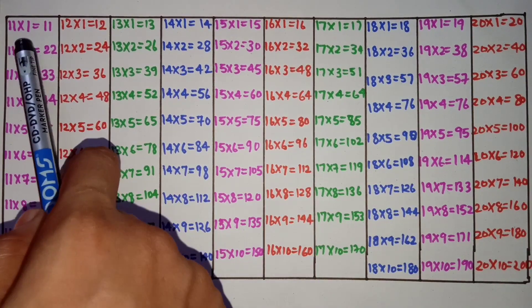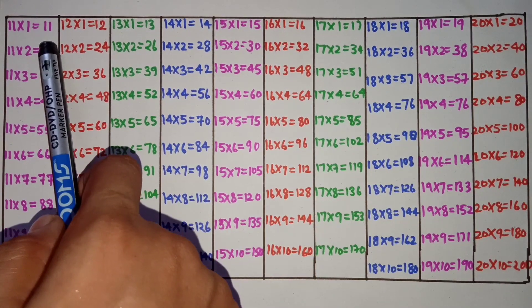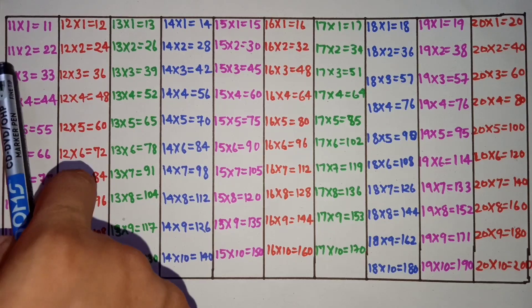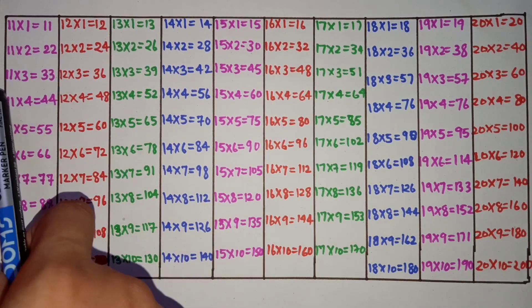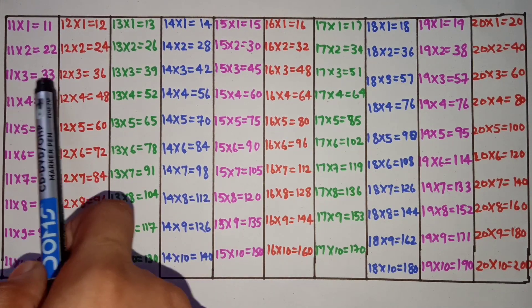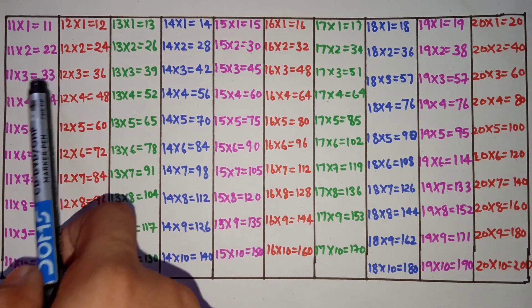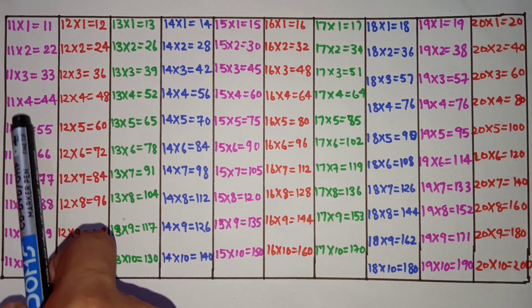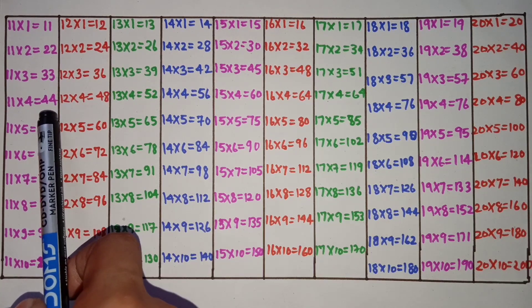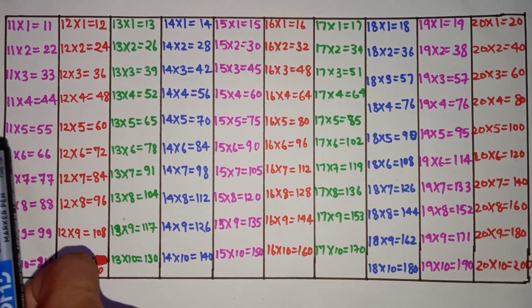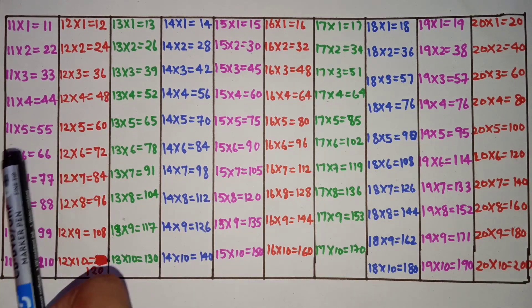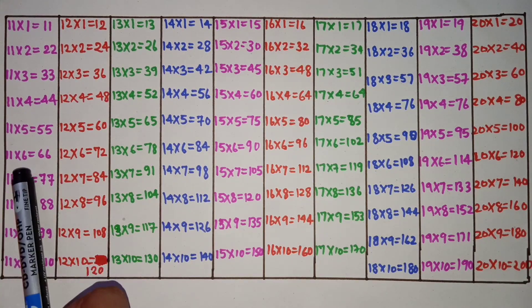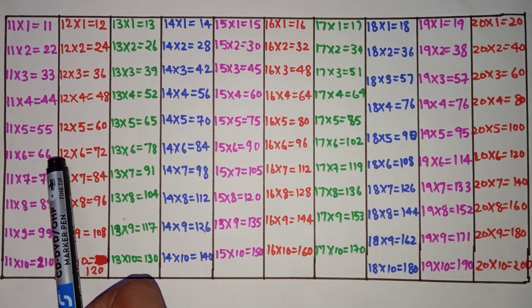11 ones are 12, 12 1s are 12, 11 3s are 32, 11 4s are 44, 11 5s are 55, 11 6s are 66.